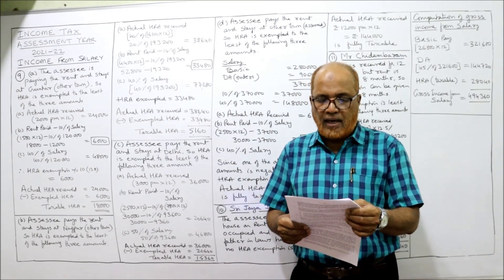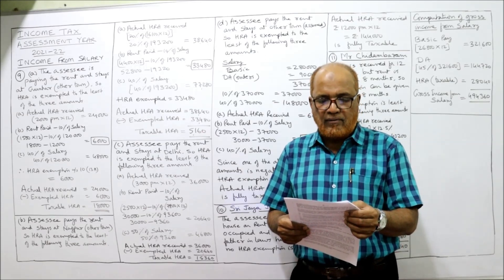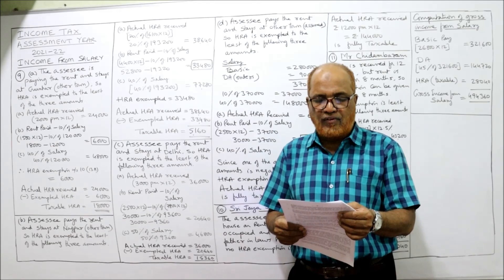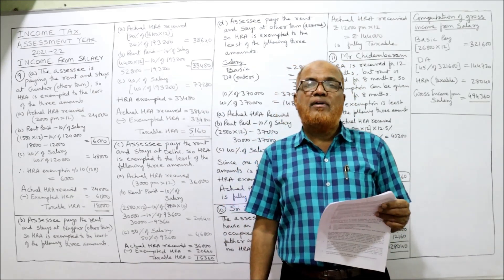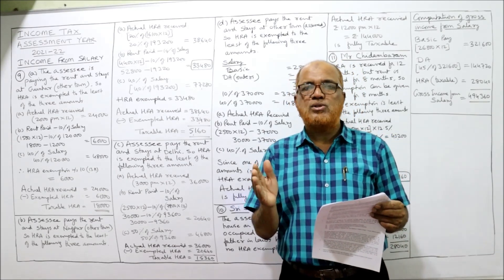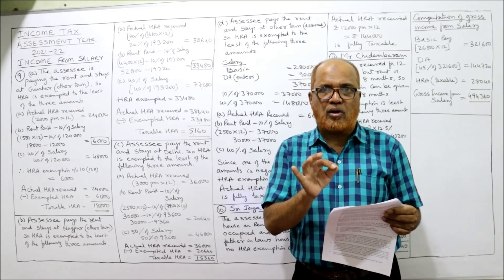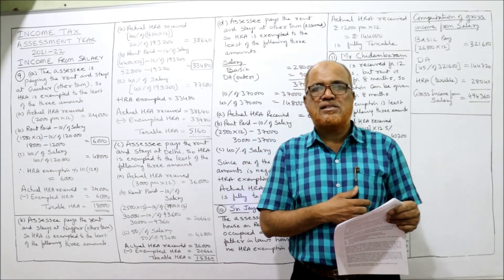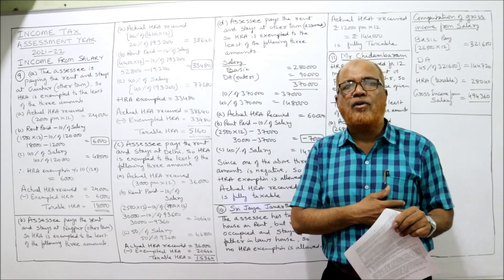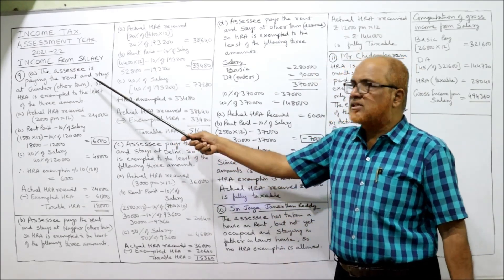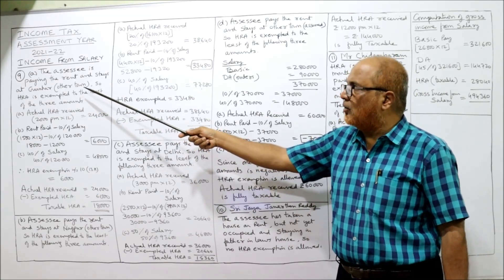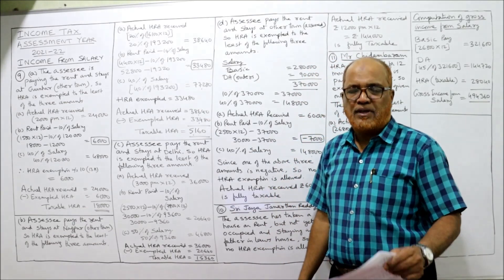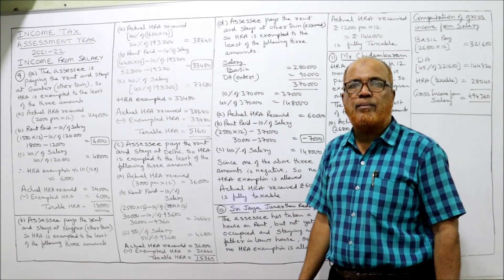Case A: Basic pay ₹10,000 per month, HRA ₹2,000 per month, entertainment allowance ₹3,000 per annum, dearness allowance 15% of basic, actual rent paid ₹1,500 per month in Guntur. The employee is paying rent and stays at Guntur — an other town — so 40% applies. HRA is exempted to the least of the following three amounts. Actual HRA received: ₹2,000 × 12 = ₹24,000.